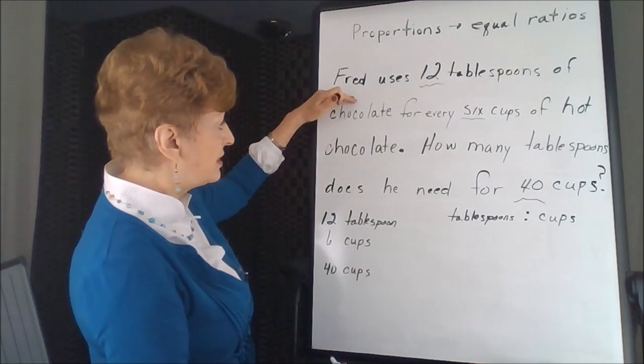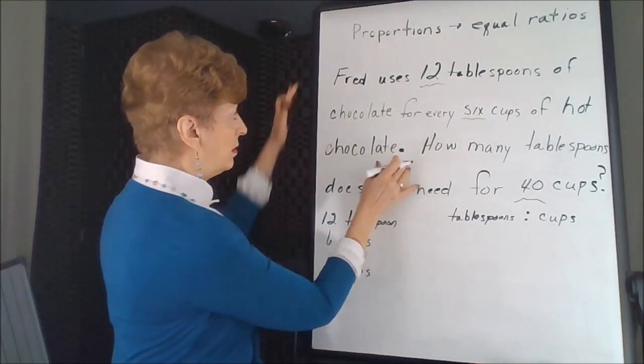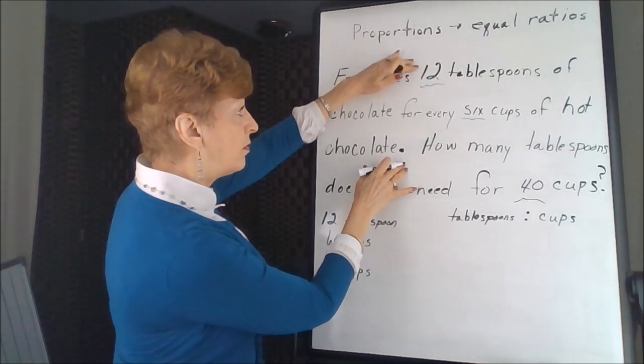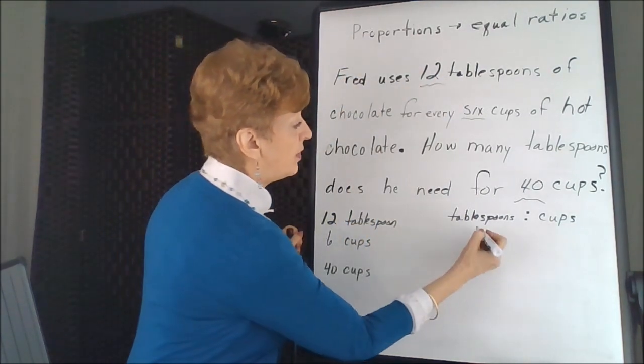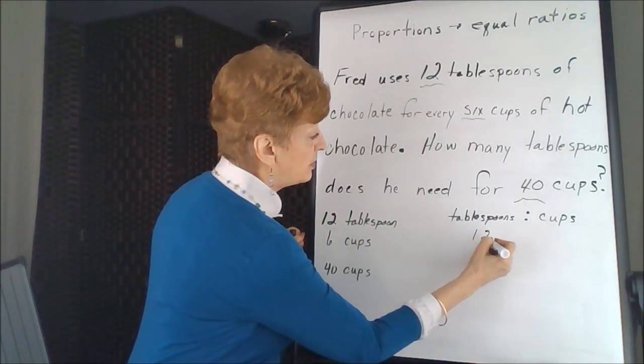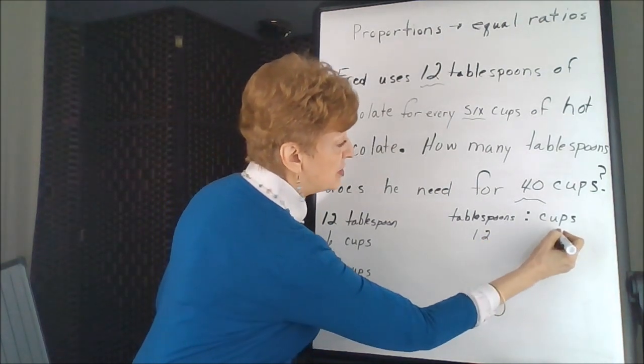In the very first sentence, here's our period, they have connected 12 with 6. So we've got 12 tablespoons for 6 cups.